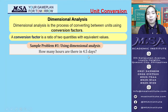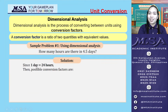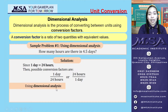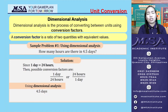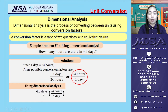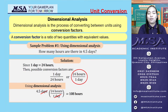Let's have an example: how many hours are there in 4.5 days? Since 1 day is equivalent to 24 hours, the possible conversion factors are 1 day over 24 hours or 24 hours over 1 day. Using dimensional analysis, we choose the conversion factor that cancels the given unit and leaves us with the desired unit. Canceling days, the calculation gives us an answer of 108 hours.